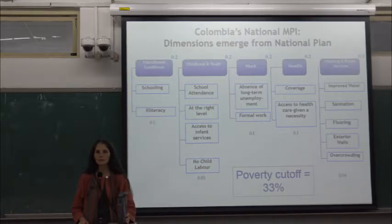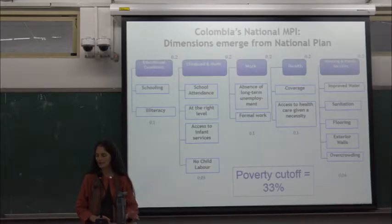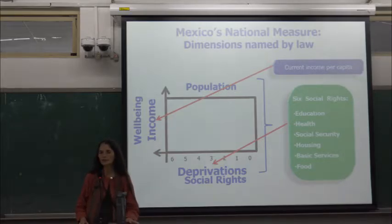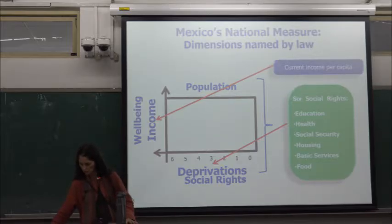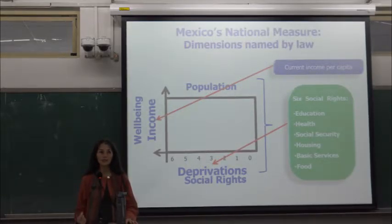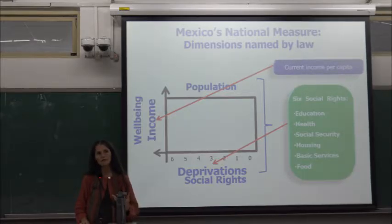Colombia's measure has five dimensions and 15 indicators: education, childhood and youth, work, informal work, health, and housing and public services. Mexico has six social rights plus income. In Colombia, dimensions emerged from the national development plan; in Mexico, they are named in the General Law of Social Development, which names seven dimensions — the seventh being social cohesion, which Mexico couldn't include in the MPI and so reports separately. In both contexts the justification was a document or law rather than participatory work.